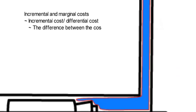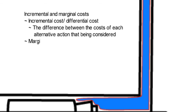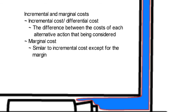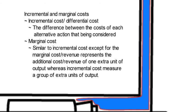Incremental and marginal costs can be classified into two types. Incremental cost, or differential cost, is defined as the difference between the costs of each alternative action being considered. Marginal cost is similar to incremental cost, except that marginal cost represents the additional cost or revenue of one extra unit of output, whereas incremental cost measures a group of extra units of output.